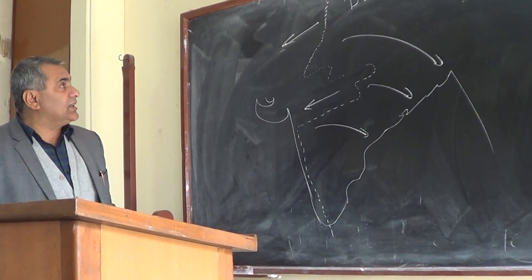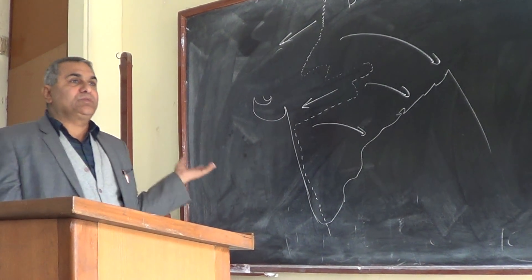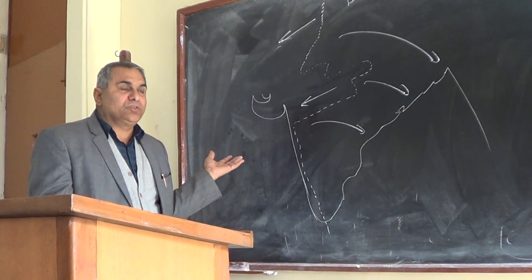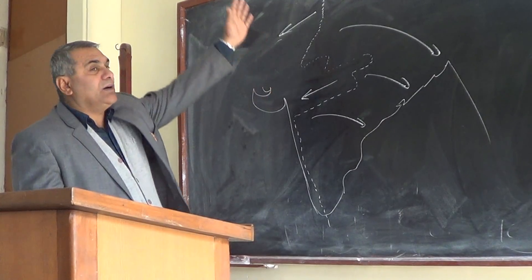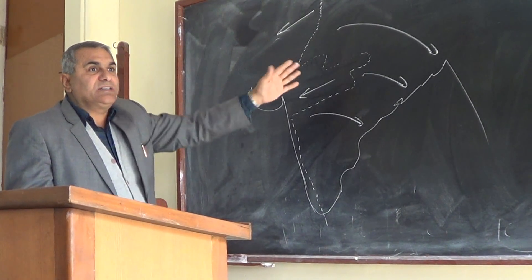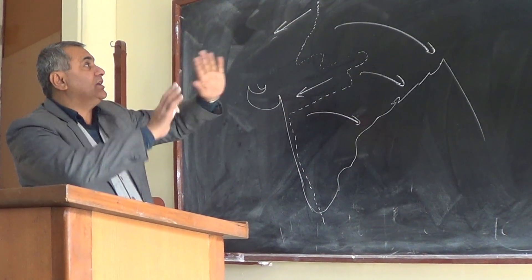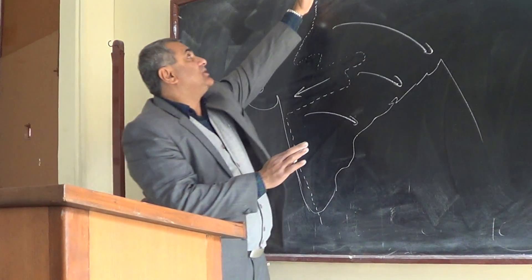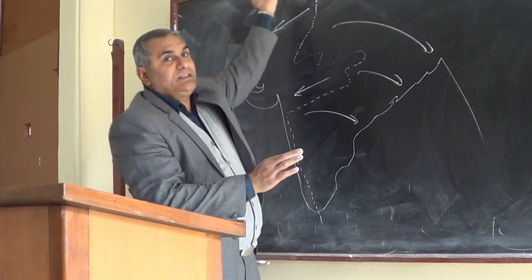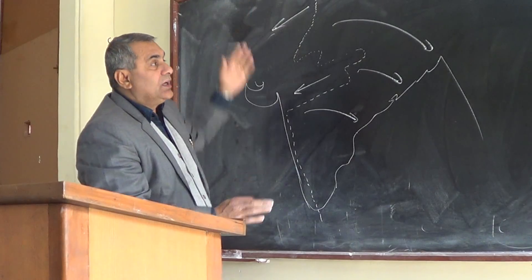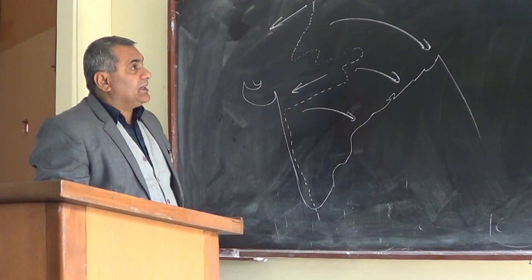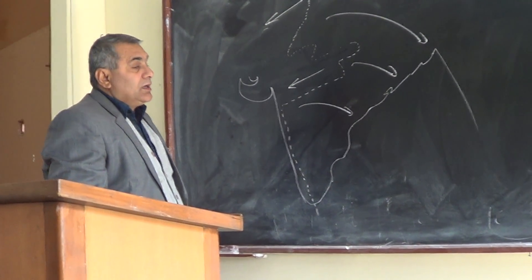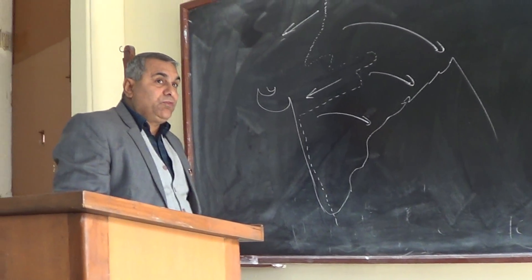Chandigarh sits on a water divide. East of Chandigarh, water goes to the Ganga system. West of Chandigarh, water goes toward Ambala and Delhi. Because Ambala and Chandigarh lie on the water divide, this illustrates the pattern of water flow.